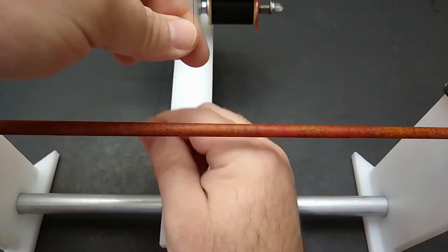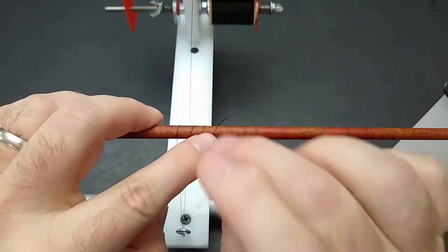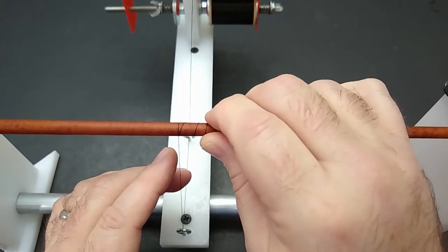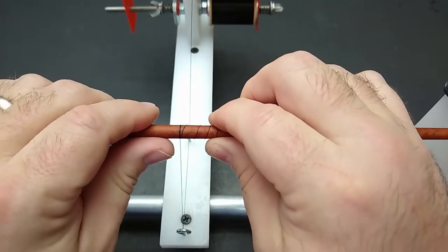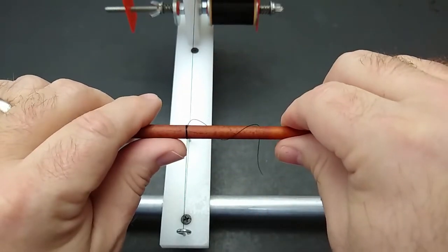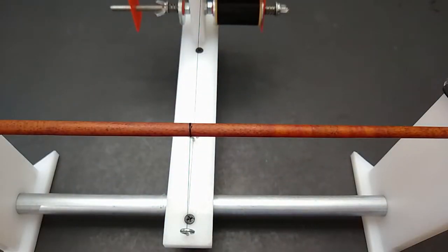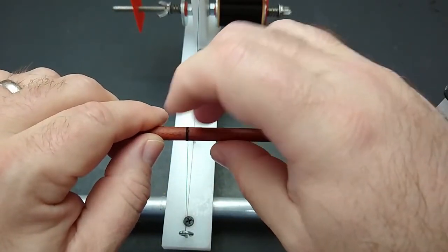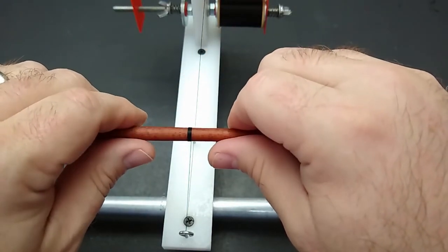I'm going to start this wrap the same way you would start any other wrap. I'm just going to put several turns on the blank using the tag end of my thread. And I'm going to wrap back over the top of that tag end for about three or four turns and then I'm going to cut that tag end off and that'll give us our start for our wrap. After you cut your tag end off you're going to want to put as many turns now on the blank as you want to be in front of the guide after the guide has been installed.